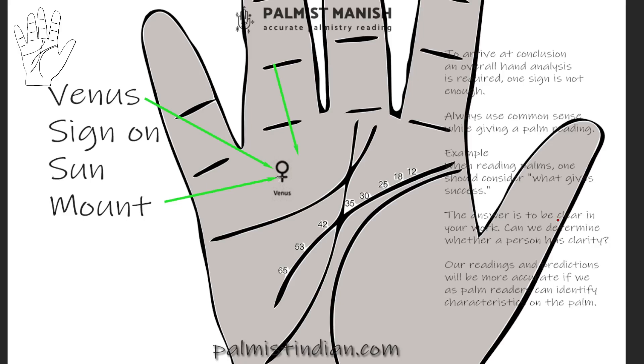But in reality, you won't find such a sign on any person's palm—not necessarily only on the mount of Venus, but on any portion of the palm. So it is advisable that you ignore this particular sign.